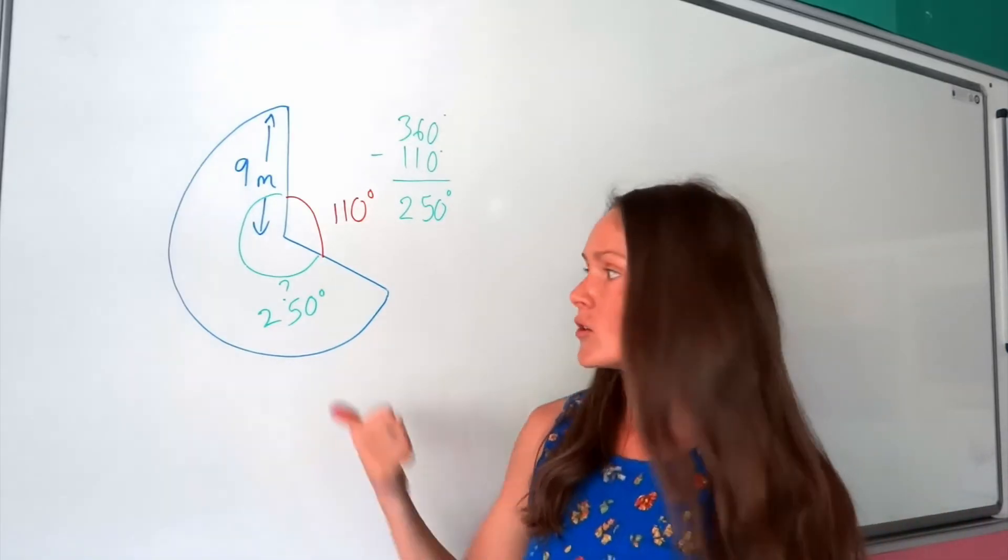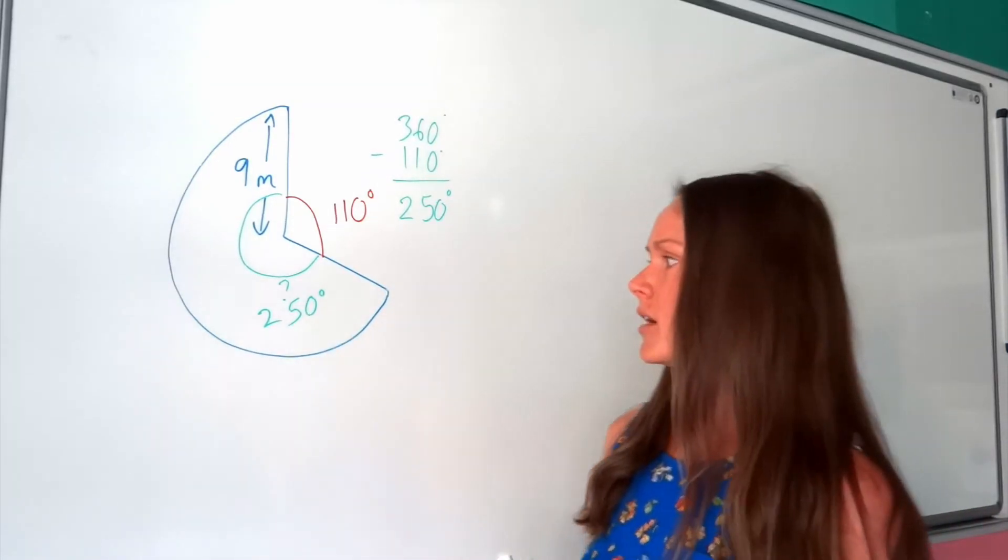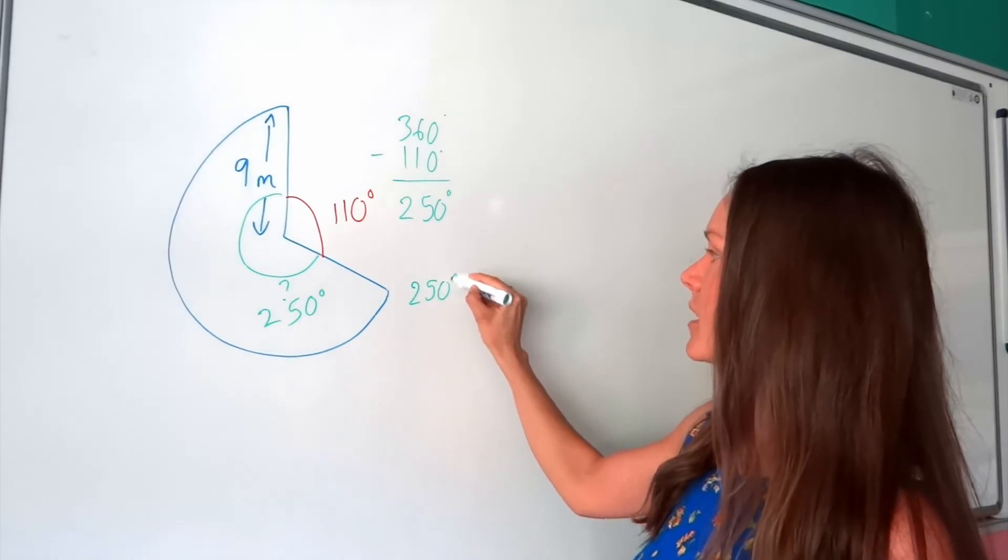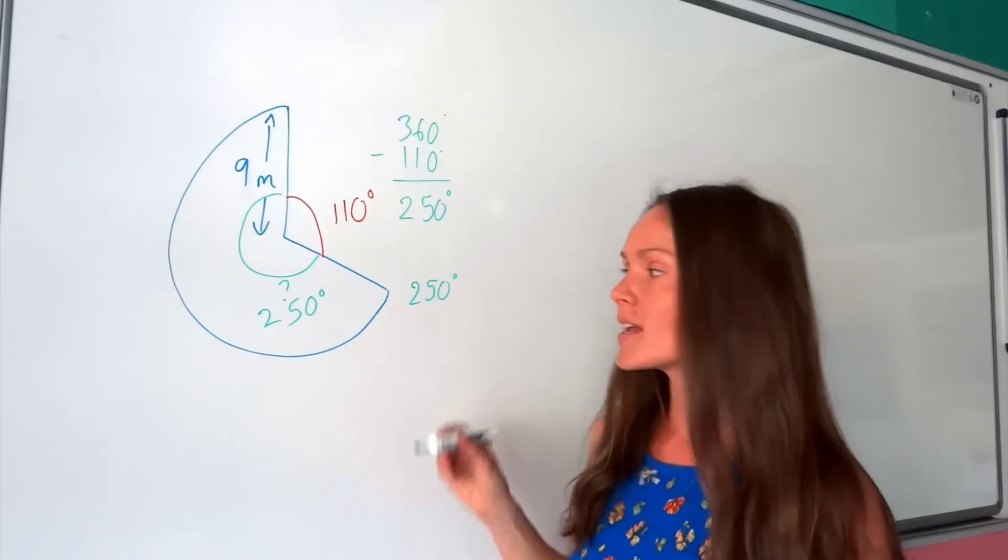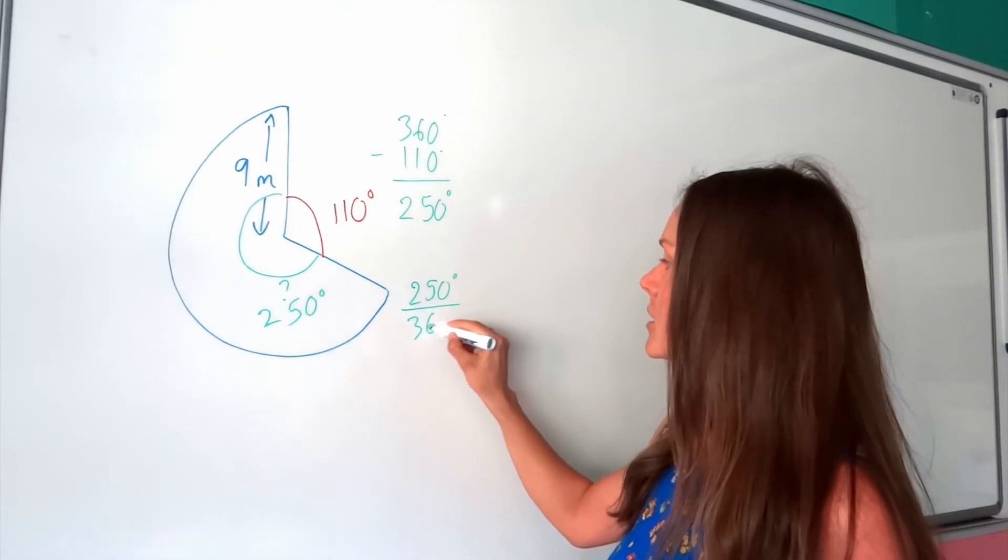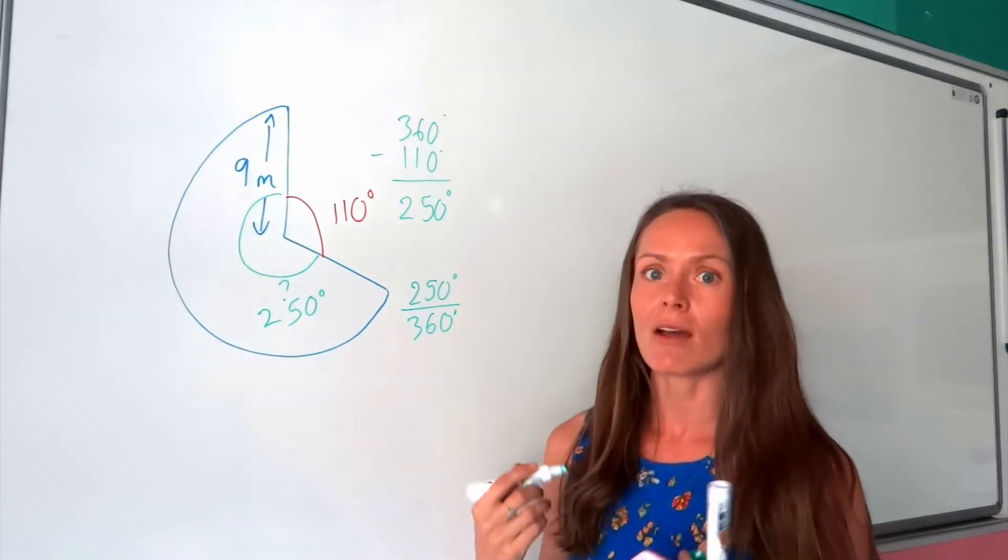Next, you need to write those degrees as a fraction. OK, so we've got 250 as the numerator. And the denominator is always 360, because that's how many degrees you have in a full circle.